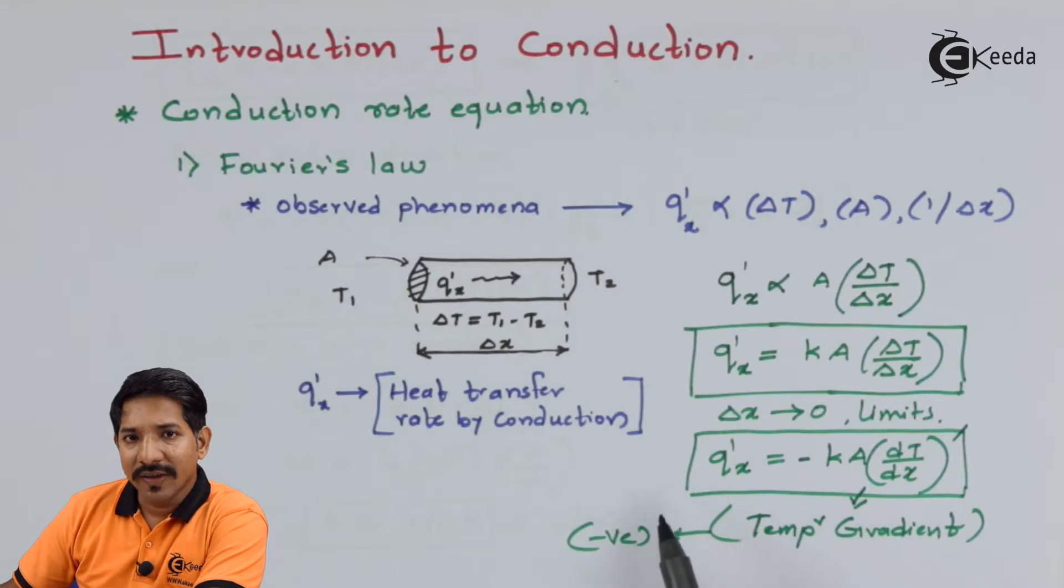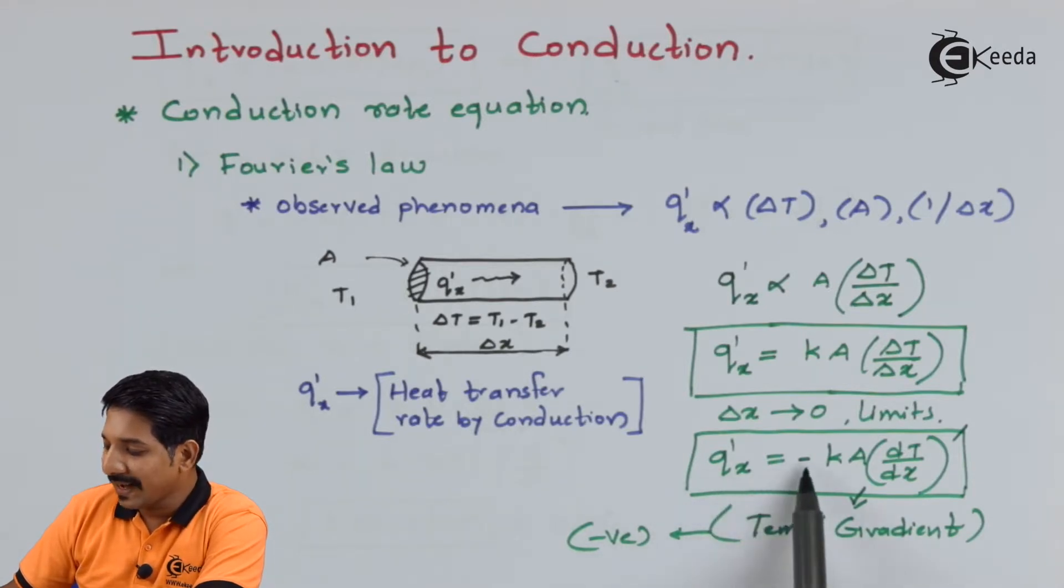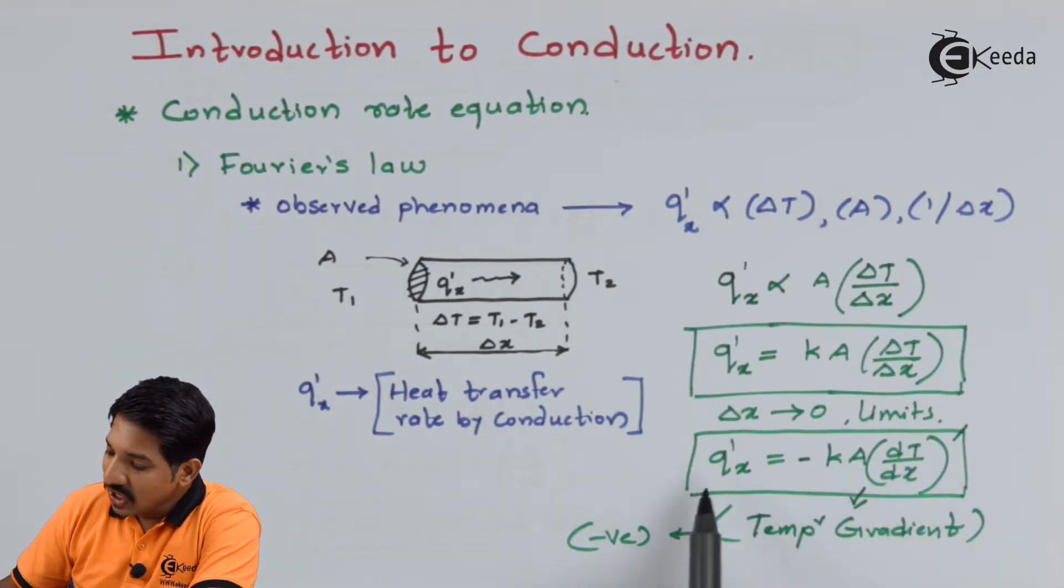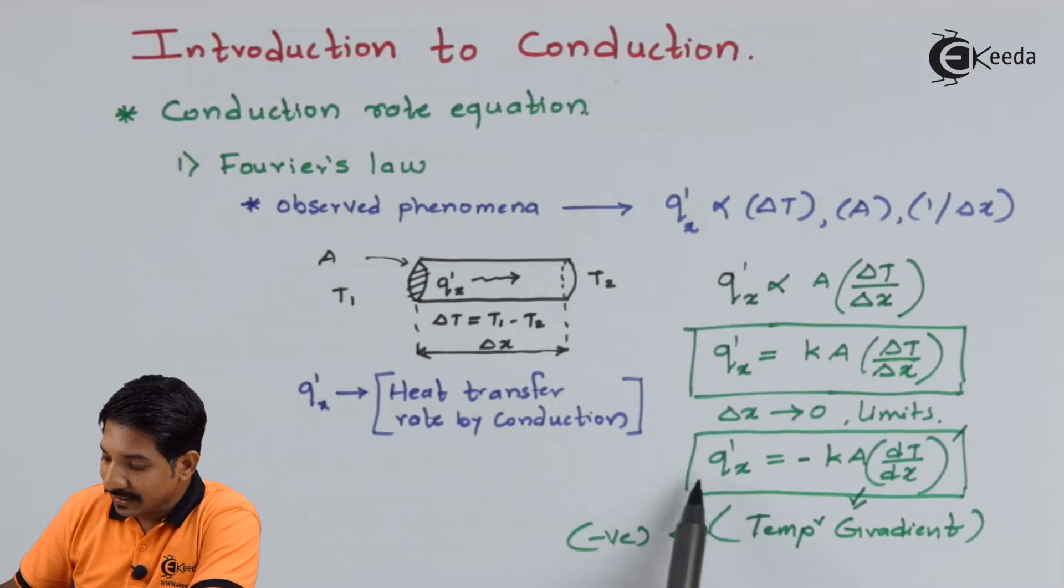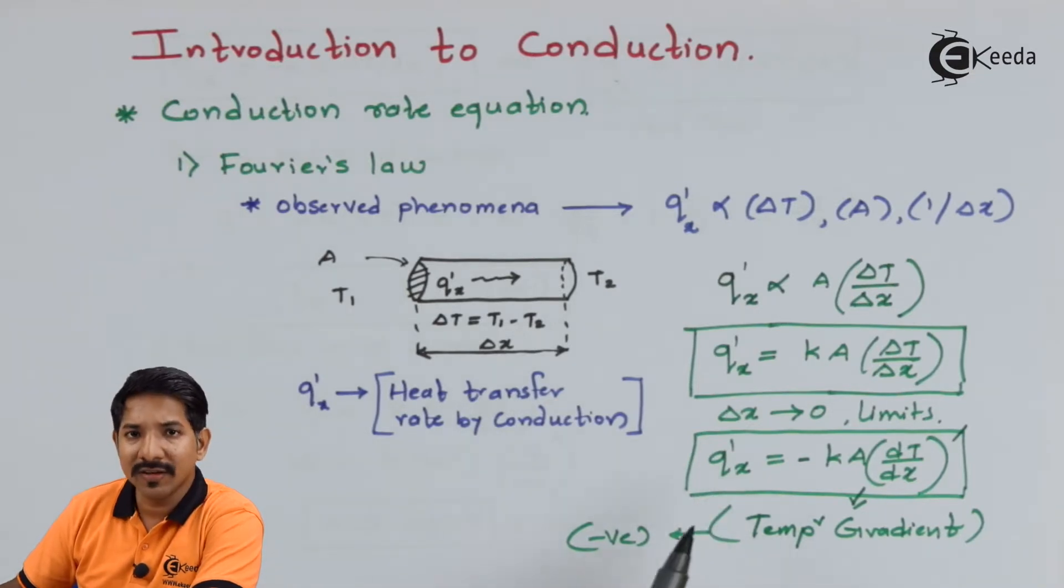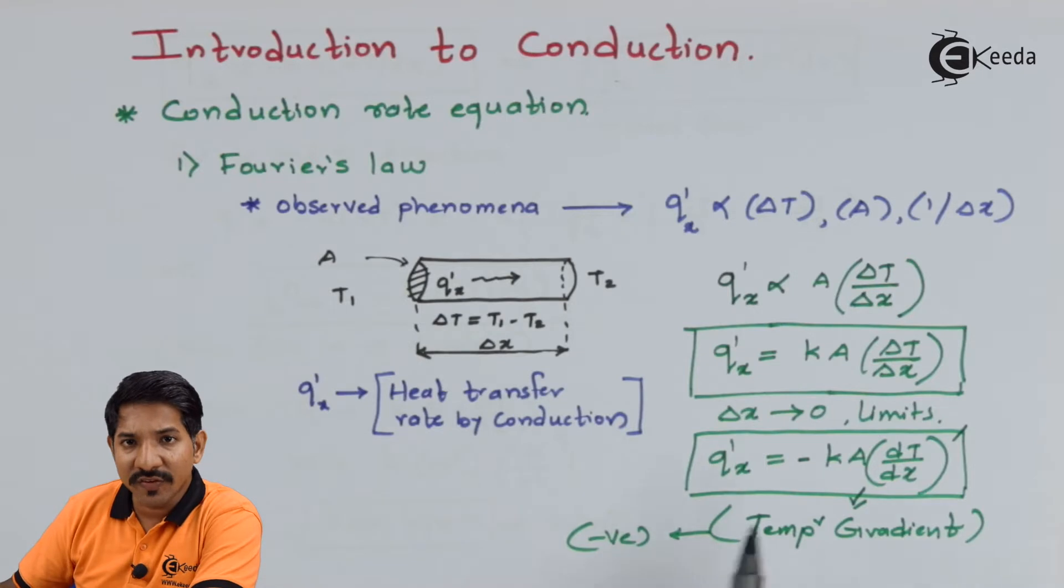So finally we have the Fourier's equation which is Q'x equal to minus KA dT by dx where dash talks about the rate of flow. Try to understand this is not heat flow, it is the rate of heat flow in x direction.